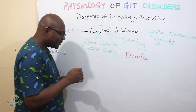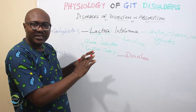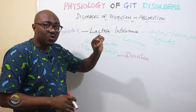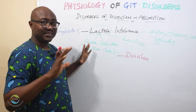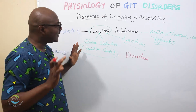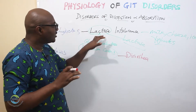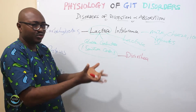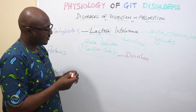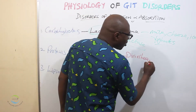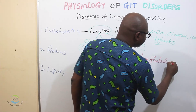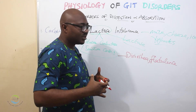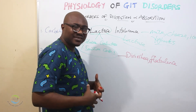When the content of the bowel moves to the large intestine, colonic bacteria — the bacteria in the large intestine — act on this lactose and break it down into different substances that produce a lot of gas. We call that flatulence. It distends the large intestine and causes cramps and pain.